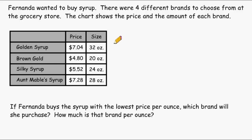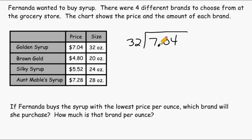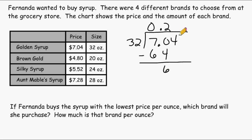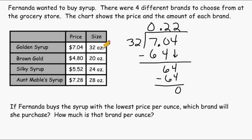This will tell us what the unit price is per ounce. Let's start with Golden Syrup, which is seven dollars and four cents, and we have to divide that by 32 ounces. We have a decimal right after the seven, so let's write it at the top. 32 cannot go into 7, so let's put a zero here. 32 goes into 70 twice — two groups of 32 is 64, and the difference between 70 and 64 is 6. We bring down the 4, which gives us 64, and 32 goes into 64 exactly two times with no remainder. So Golden Syrup is 22 cents per ounce.